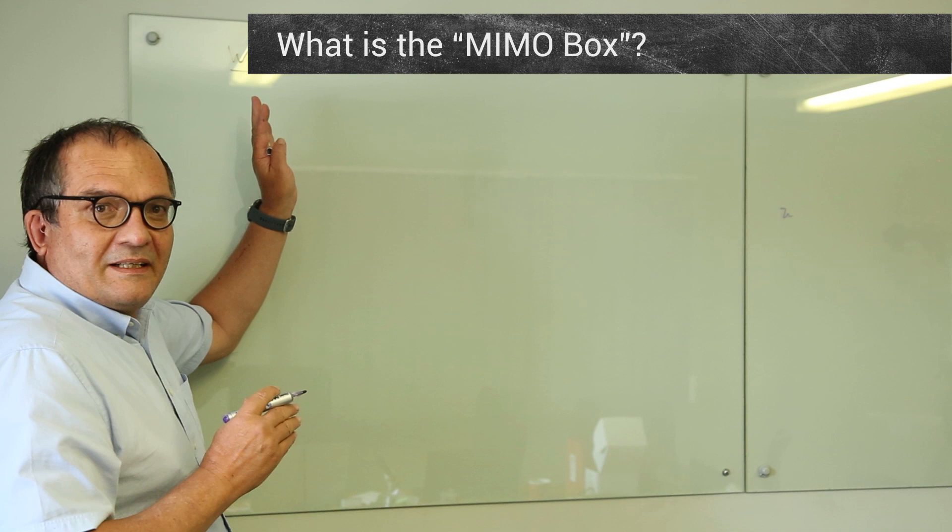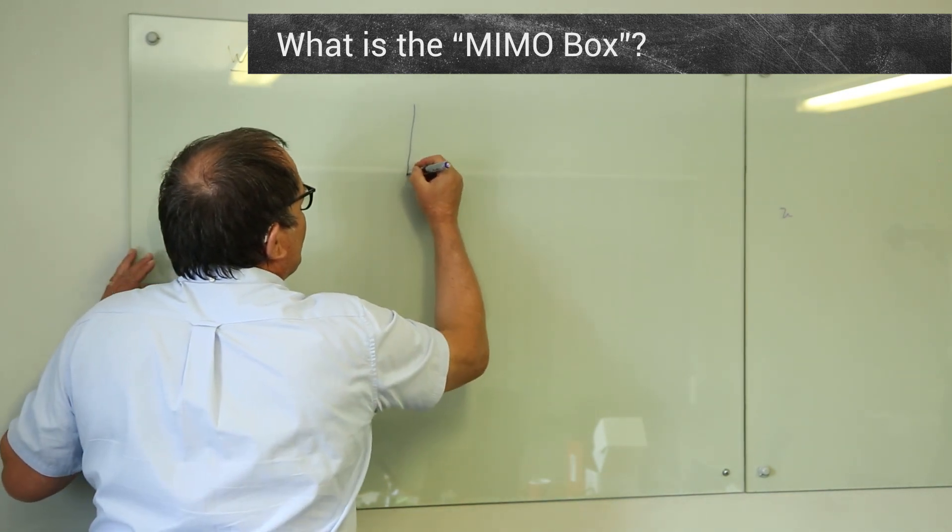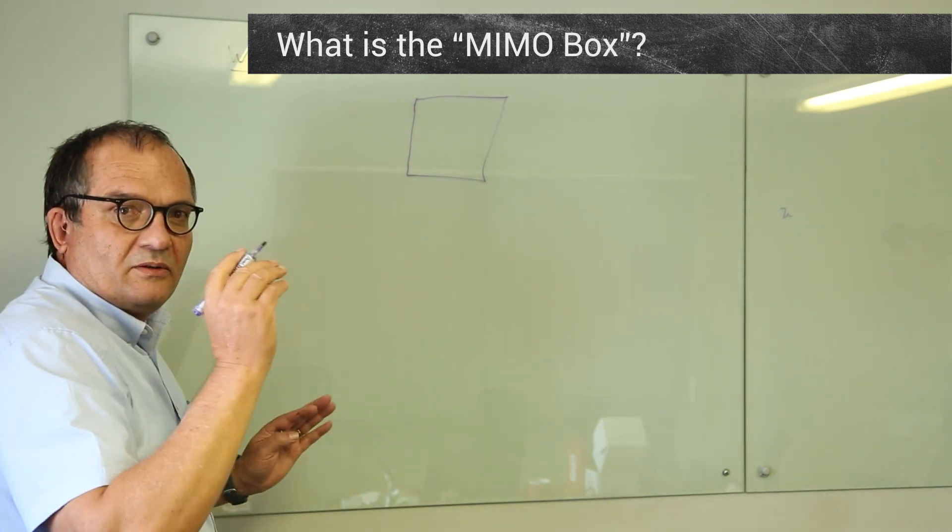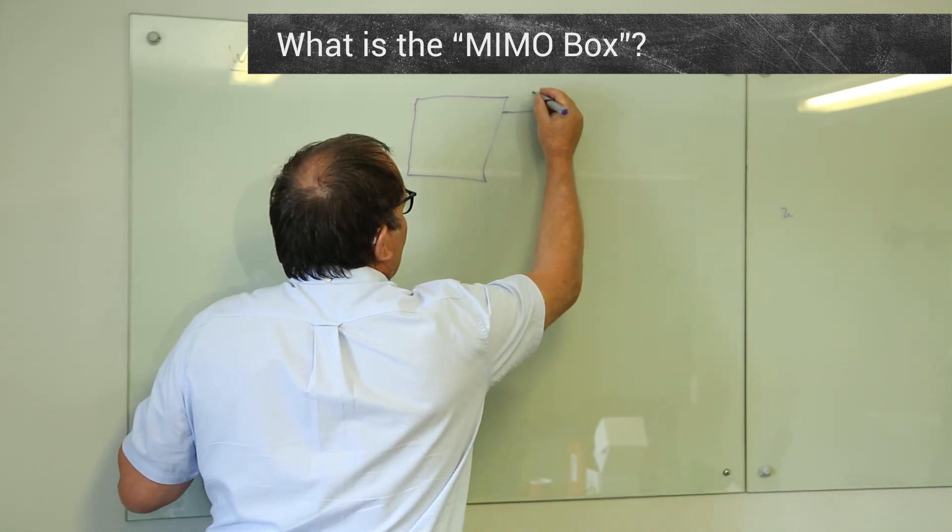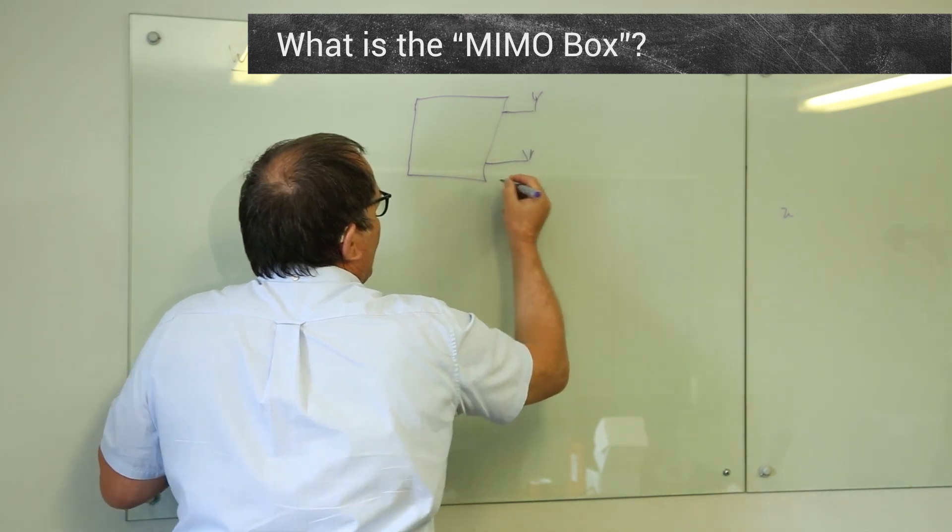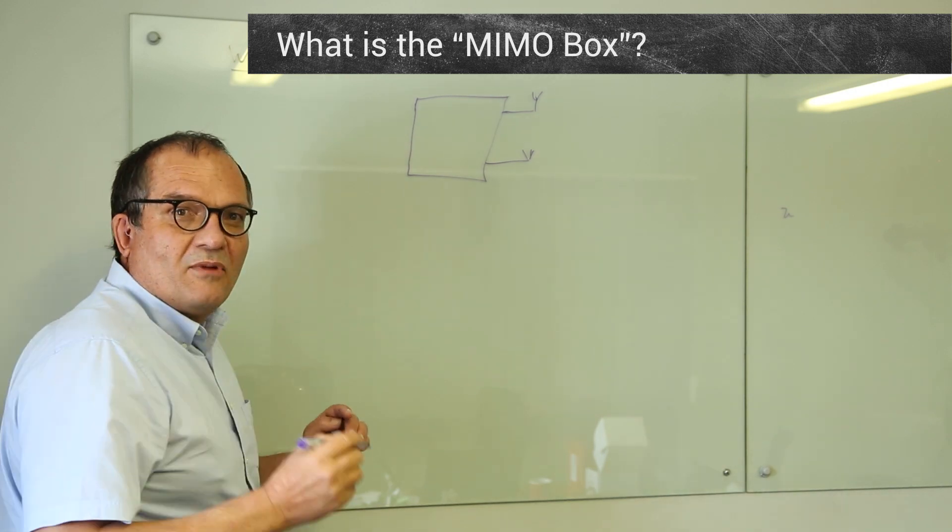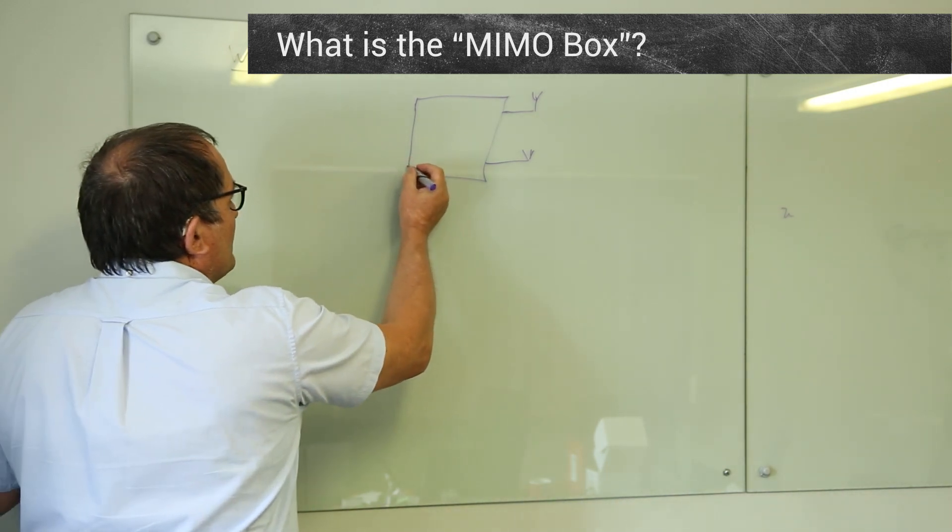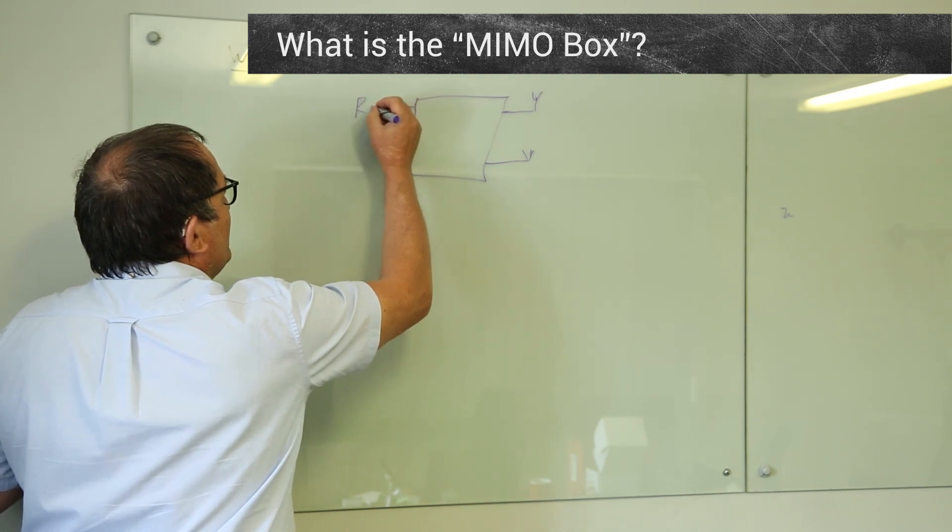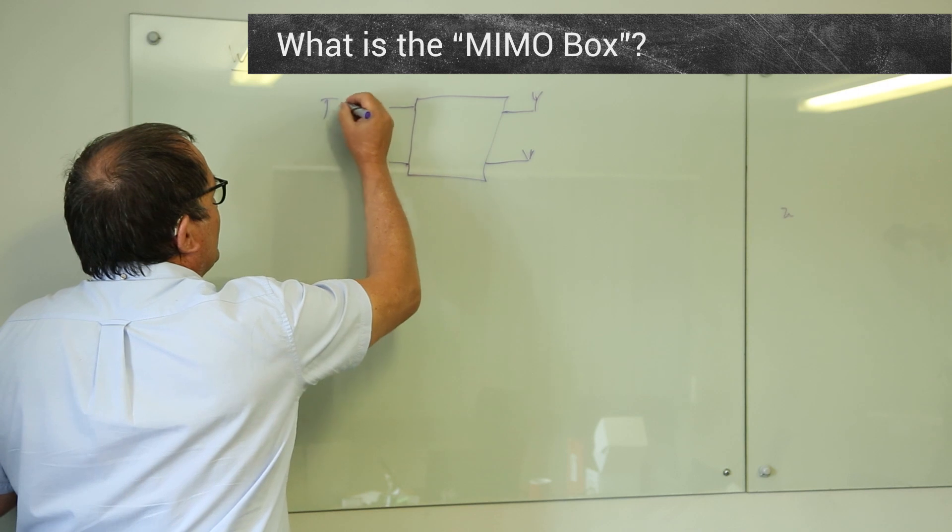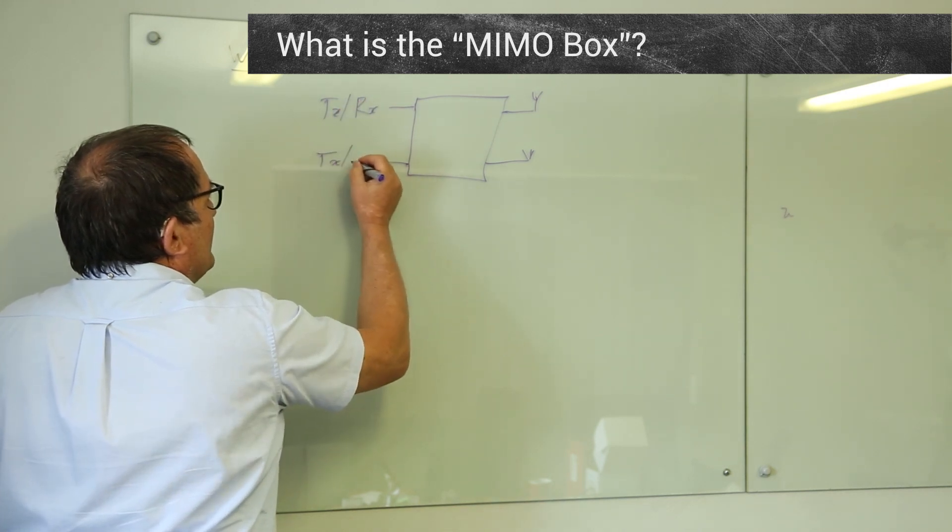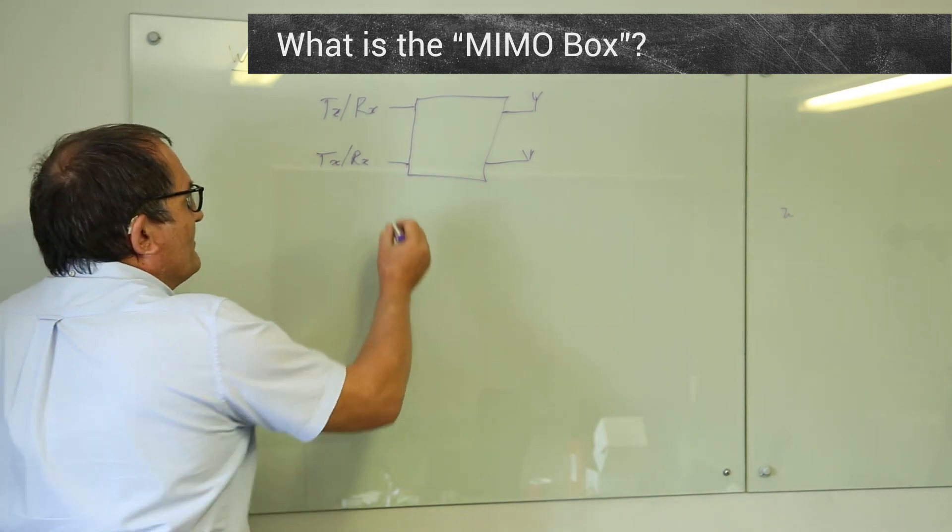To understand all of it, I first want to explain the MIMO box. I'm going to do everything for two-by-two as a start. You've got one antenna and another antenna, then inside any MIMO router you've got this thing which I call the MIMO box. Here you've got two receivers or two transceivers, TX/RX. In other words, you've got two essentially modems because the whole idea with MIMO is that we want to get two data streams if possible.